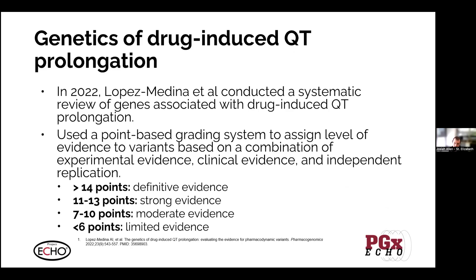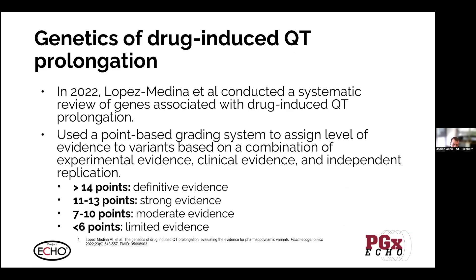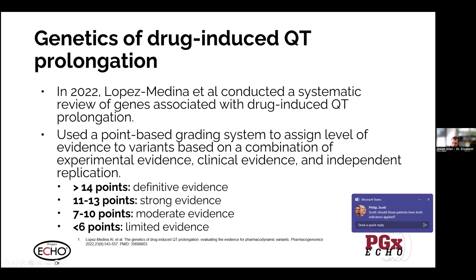Lopez Medina et al. at the University of Michigan conducted a systematic review of genes associated with drug-induced QT prolongation. They used a semi-quantitative system to grade the level of evidence based on experimental evidence, clinical evidence, and independent replication — assigning points based on study quality and type. Scores greater than 14 were definitive, 11–13 strong, 7–10 moderate, and less than 6 limited evidence.